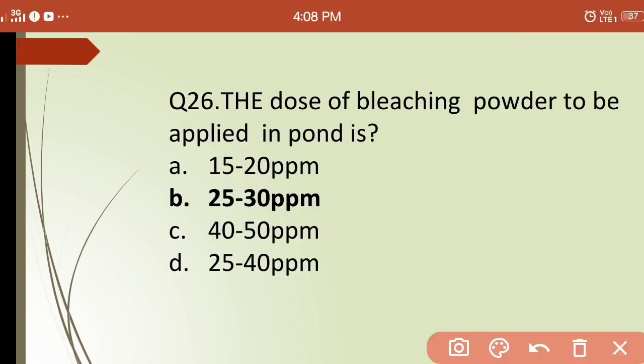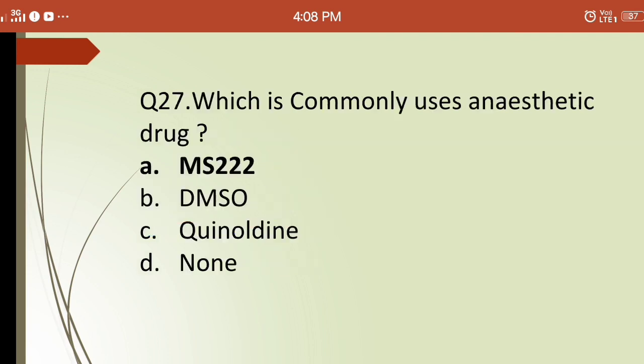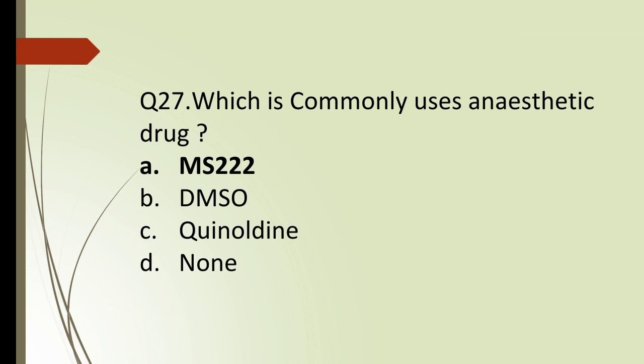Twenty-sixth question: the dose of bleaching powder to be applied in a pond is? Options are: (a) 50–20 ppm, (b) 20–30 ppm, (c) 40–50 ppm, (d) 25–40 ppm. The correct answer is (b) — bleaching powder should be applied at 20 to 30 ppm in a pond.